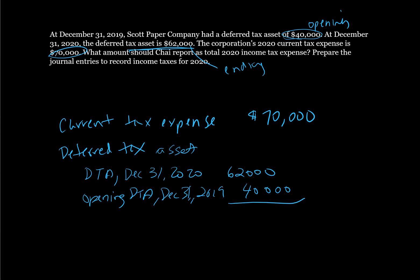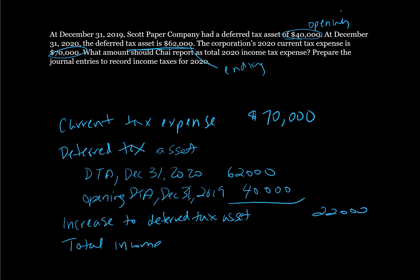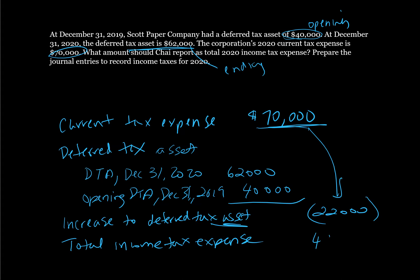So what do we need to do on our balance sheet to get these accounts to match? We need to increase our deferred tax asset account by $22,000. So our total income tax expense is going to be $70,000 minus our $22,000 benefit from our deferred tax, giving us the net of $48,000. This is our total income tax expense.